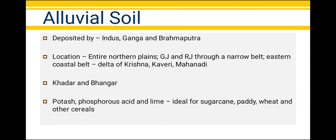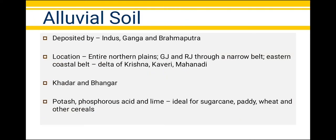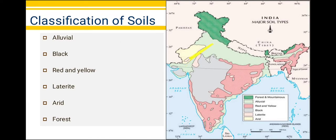Alluvial soil is the most widespread soil of India. The entire northern plains are made of alluvial soil, deposited by three important Himalayan river systems — the Indus, the Ganga, and the Brahmaputra. These soils extend through the entire northern plains, then through a narrow belt from Rajasthan into the plains of Gujarat. Alluvial soil is also found in the eastern coastal plains, where rivers form deltas — like the Mahanadi delta, Godavari delta, and the Krishna and Kaveri deltas.